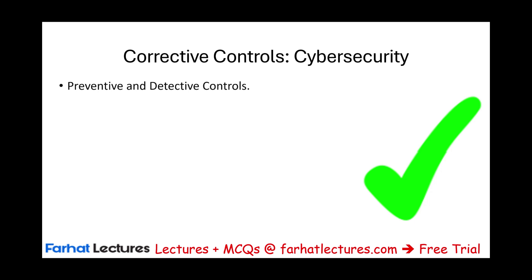Why? Preventive controls would help you eliminate the attack from taking place in the first place. So if you can stop the attack from taking place, you avoided the attack altogether. Detective controls — if attackers were able to penetrate the preventive parameters of the company, the parameters of the IT system or network, then you would rely on detective controls to stop them.